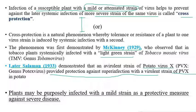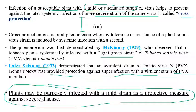The entire cross protection mechanism relies on purposefully infecting with mild strains that can offer resistance against the severe disease caused by the same strains of plant viruses.